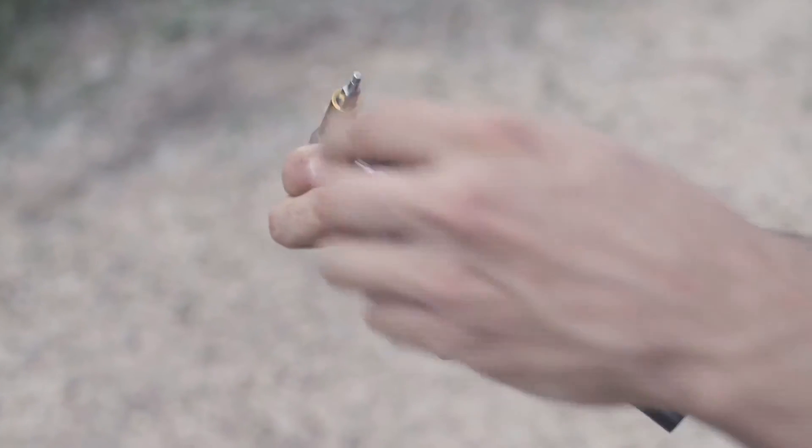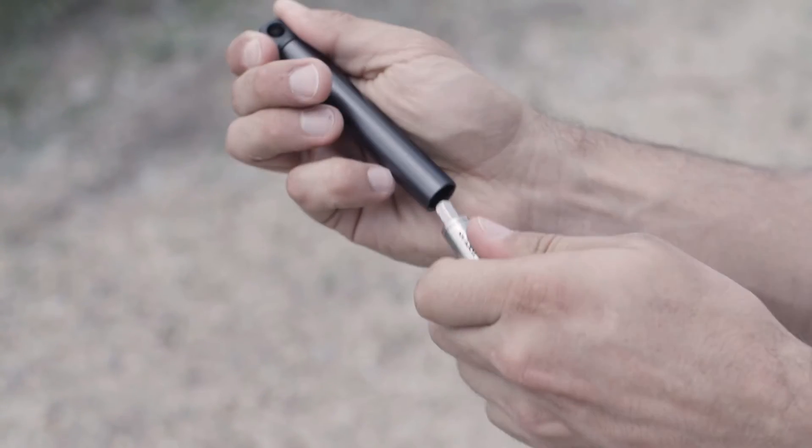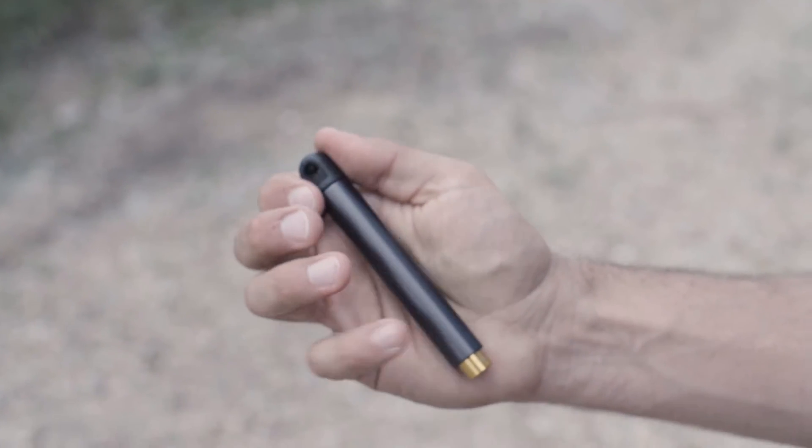The Nano Torque bar is one of the smallest torque wrenches on the market. Two of your favorite bits can be carried in the handle of the Nano Torque bar, so you can leave the rest at home and bring only what you need with you.